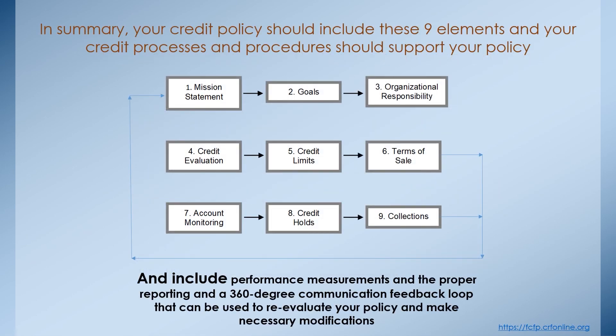In summary, your credit policy should include these nine elements, and your credit processes and procedures should then support the policy you've developed. Remember the guiding principle: include performance measurements, proper reporting, and the 360 degree communication feedback loop so that you can reevaluate your policy and make necessary modifications. Thanks for attending today's session, and be sure to check for the more detailed session on building an effective credit policy where we'll go into these nine sections in much more detail.